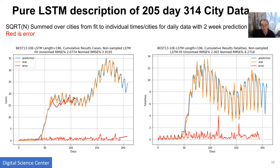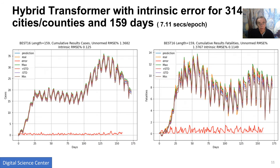At the bottom in red is the error, which in general is quite small. There's a glitch in a couple places — probably something was not recorded properly, so the data is hardly perfect. This later dataset involves over 200 days.